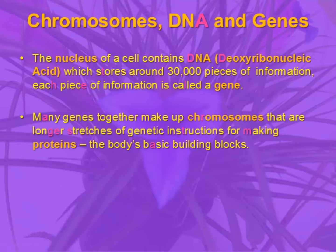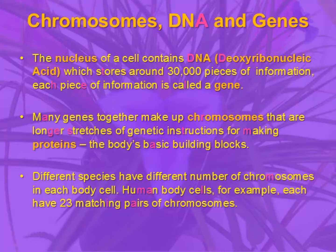Actually, they make amino acids, which are then assembled into proteins. And different species have different numbers of chromosomes in all of their body cells. So, human body cells, for example, each have 23 matching pairs of chromosomes.